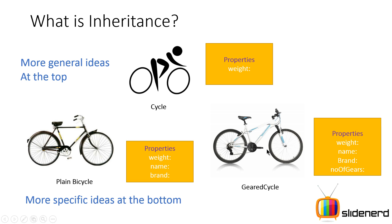You can also have a gear cycle, which is a very different type of cycle. It has the same common property weight, plus additional aspects like name and brand from plain bicycle, and more specific properties like number of gears. So a gear cycle is a special type of plain bicycle, which in turn is a special type of cycle. Classes with common properties are called a superclass, and classes with more specific properties are called a subclass.